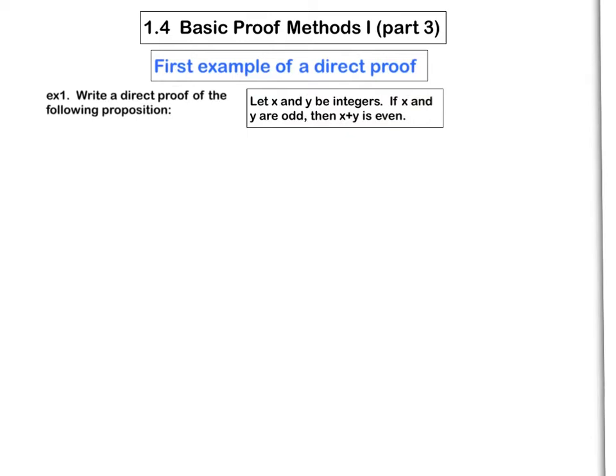So note first of all that the implication here is that no matter which integers x and y we use, as long as they're odd, then the sum has to be even. And so that means the variables x and y must be universally quantified. So the very first step in coming up with a formal proof of this statement is to write this statement in symbols.